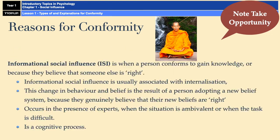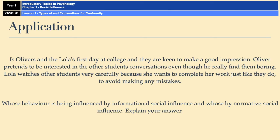There's a quick note-taking slide for normative social influence and informational social influence. In terms of an exam application question, something like this could come up: you get a little story and then you're asked whose behaviour is being influenced by informational social influence and whose by normative. For example, Lola watches other students carefully because she wants to complete her work correctly — she's new at school and doesn't want to make mistakes, so she conforms to be right. Whereas Oliver pretends to be interested because he wants to fit in, meaning he's complying due to normative social influence.